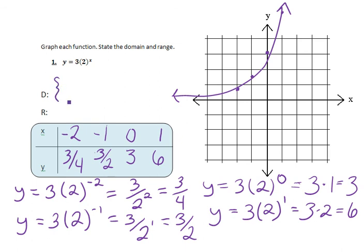And now it's clear to see that the domain, or our x values, are all real numbers, because the graph is extending in the x direction on both sides.